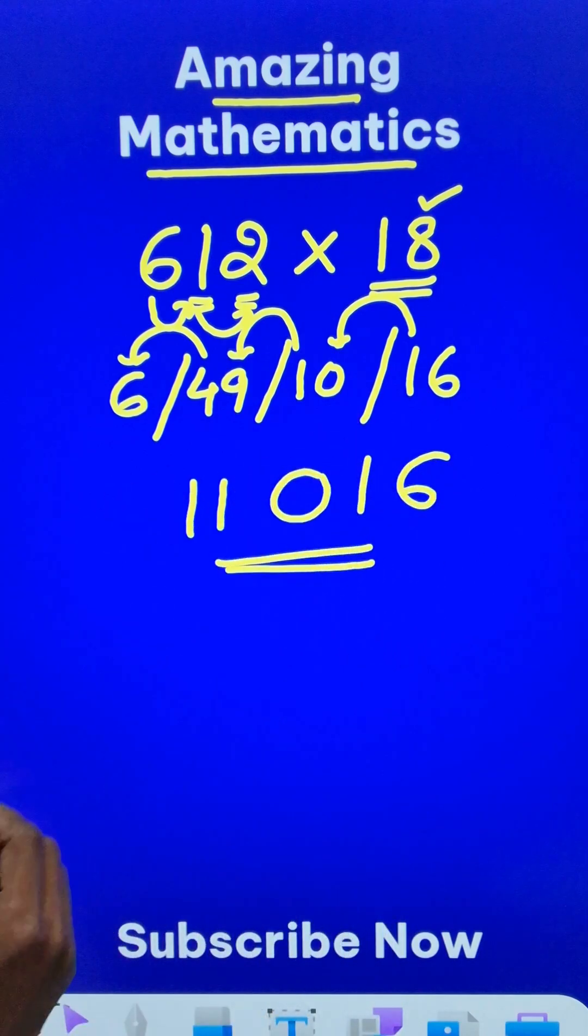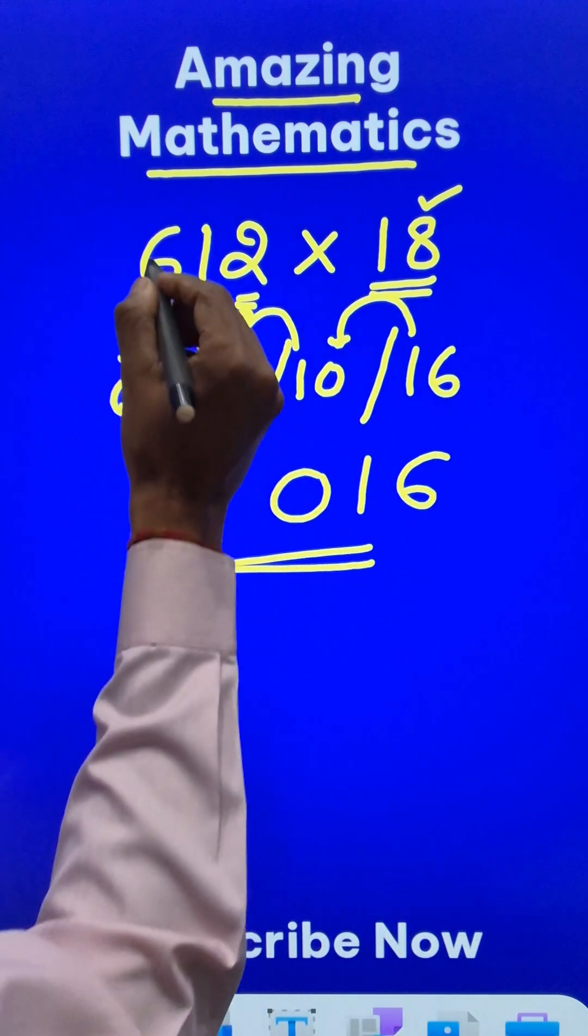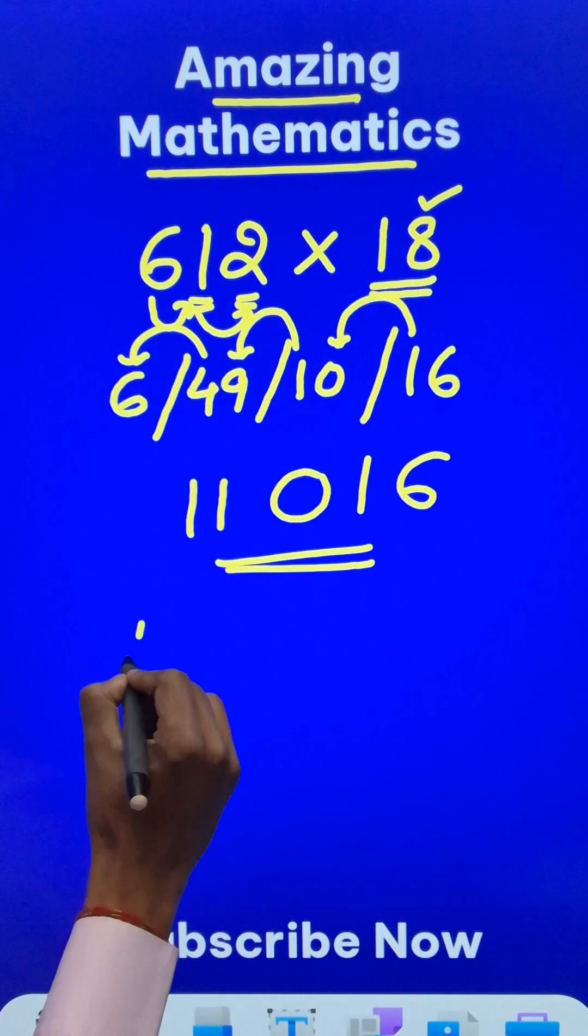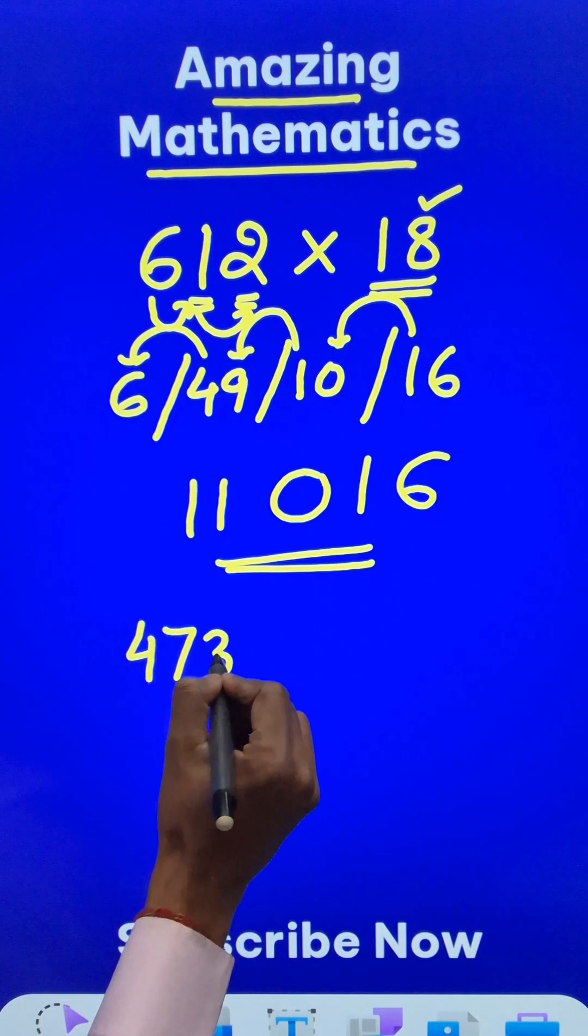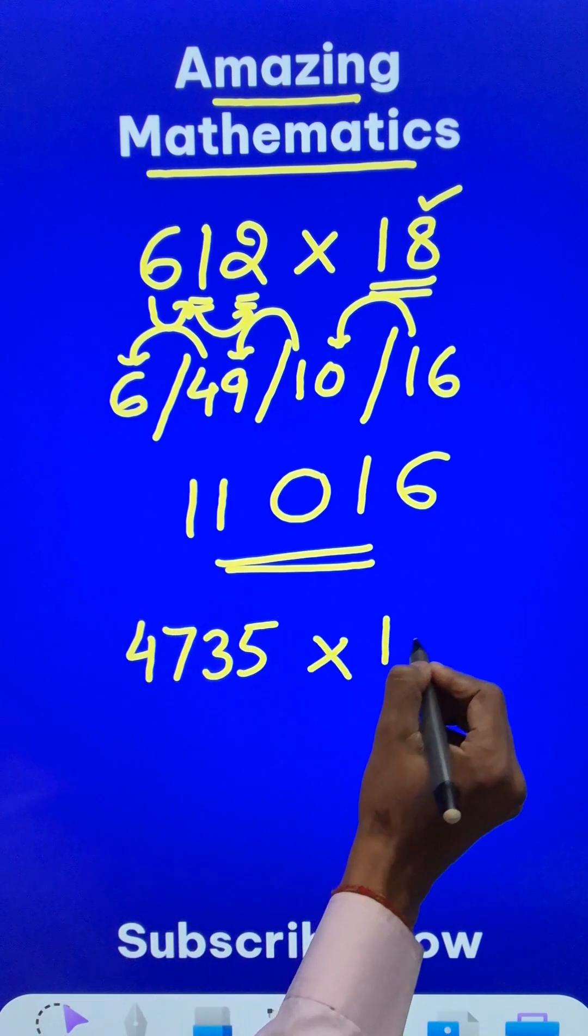Now pick up the calculators and check your answer, and let's try this for some bigger number like a 4-digit number. 4, 7, 3, 5 times 8.